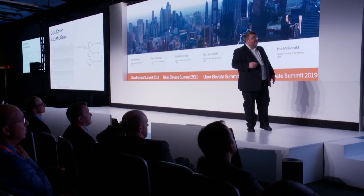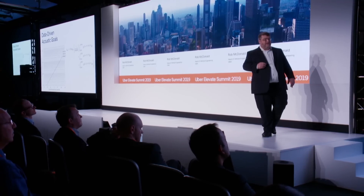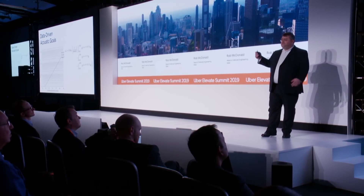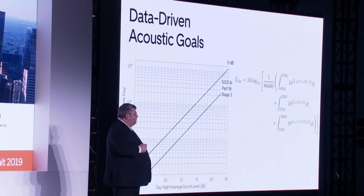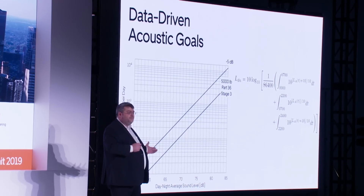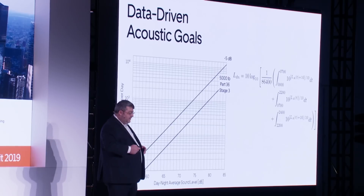So with that, we can calculate the DNL for a 5,000-pound Stage 3 helicopter. As we change the number of flights, the DNL level changes correspondingly, and it tells us the overall impact that we're having. If we could make that vehicle 5 dB quieter, we'd shift that curve to the left, thereby allowing more flights at the same DNL — and so on for 10 dB, 15 dB, 20 dB quieter.